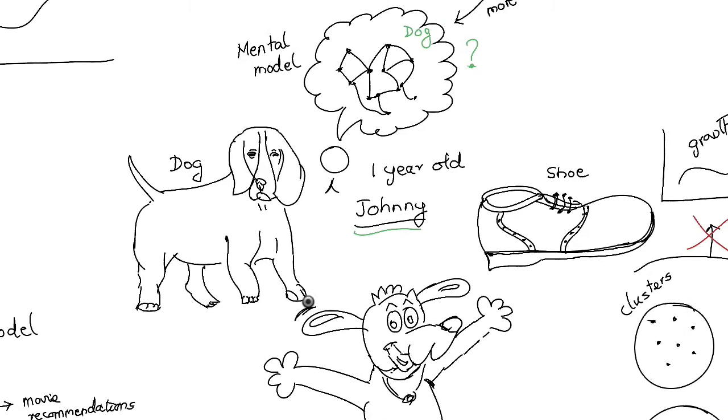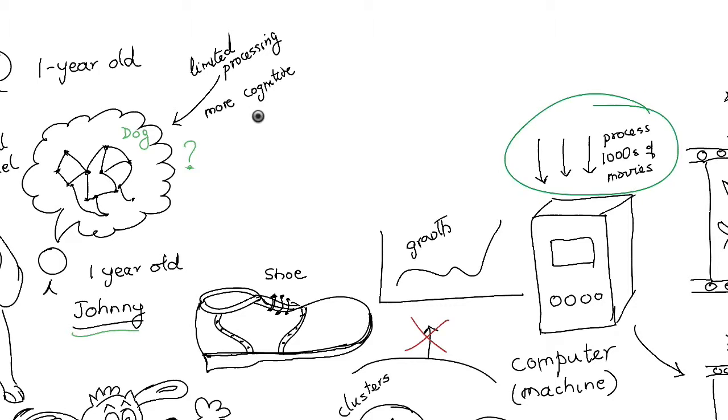While computers are great at processing lots of information, we haven't figured out how they can replicate the creativity of the brain. And we humans have to determine the models that the computer use for learning in the first place.